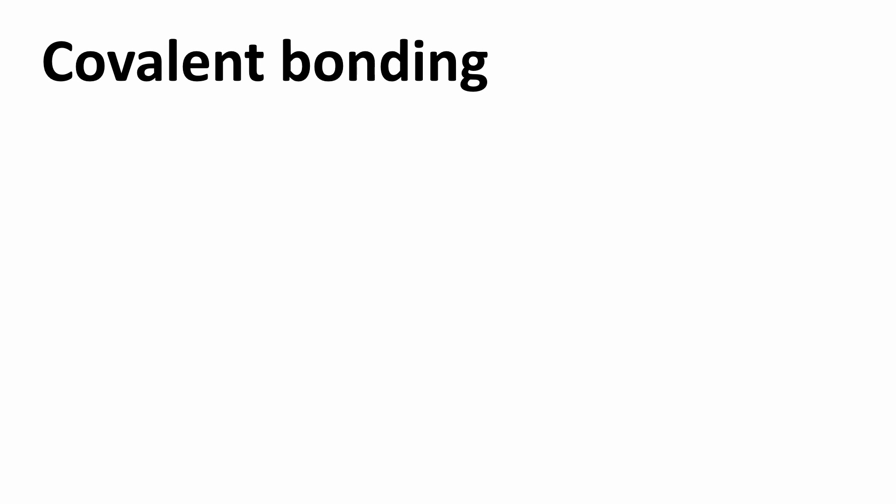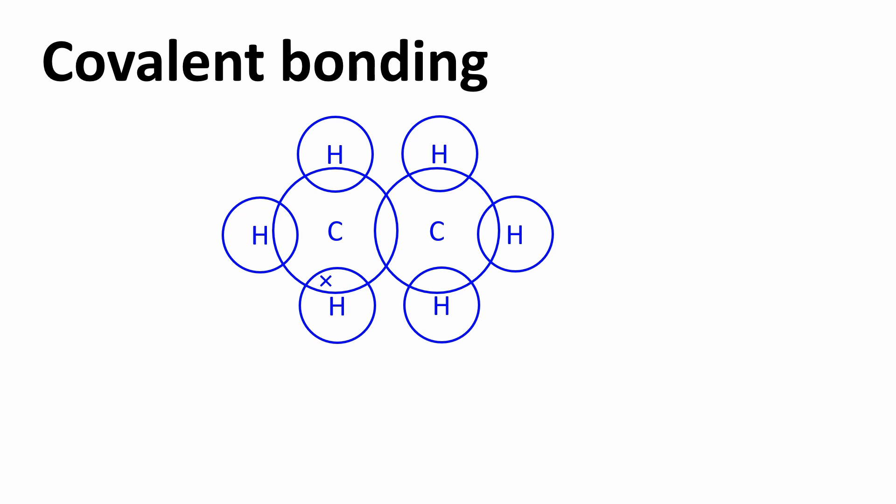Welcome everyone. Covalent bonding involves the sharing of electron pairs between atoms. This can be represented using dot and cross diagrams.